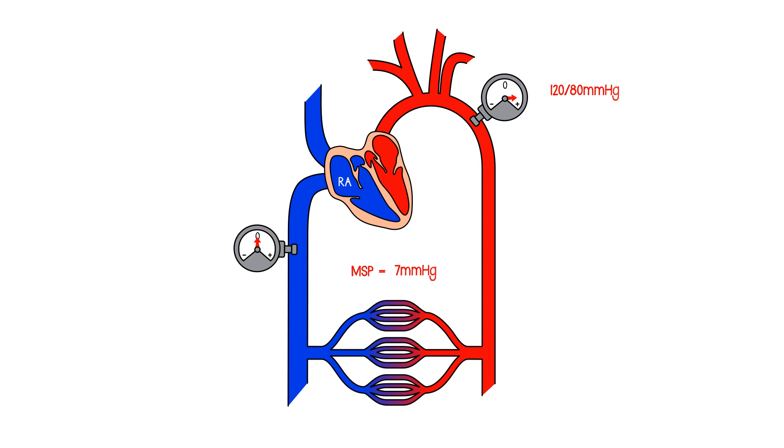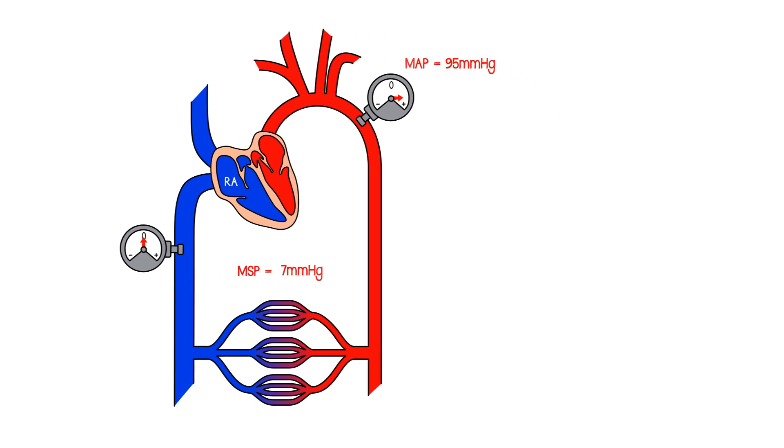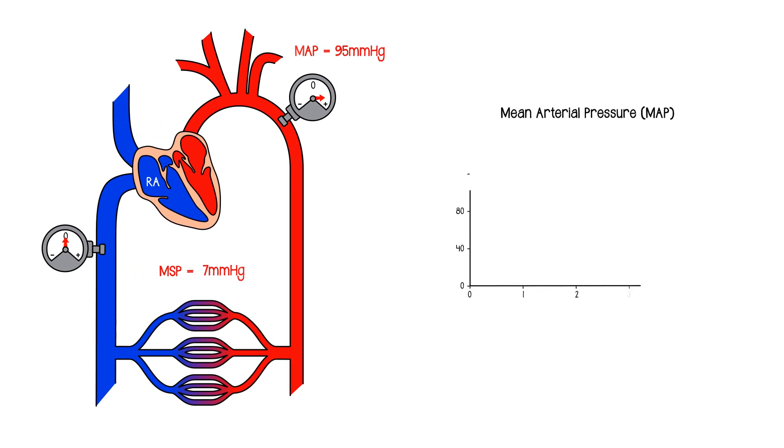Well, 120 over 80, that's because it fluctuates, it moves up and down. But let's take a mean value and use the mean arterial pressure of 95 millimeters of mercury. Now you might ask, why is the mean arterial pressure not 100? Why isn't it exactly the average of systolic and diastolic? The answer is that the heart spends a little bit longer in diastole.